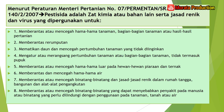Yang keempat, mengatur atau merangsang pertumbuhan tanaman atau bagian-bagian tanaman, tidak termasuk pupuk. Yang kelima, memberantas atau mencegah hama-hama luar pada hewan-hewan peliharaan dan ternak. Yang keenam, memberantas dan mencegah hama-hama air. Yang ketujuh, memberantas atau mencegah binatang-binatang dan jasad-jasad renik dalam rumah tangga, bangunan, dan alat-alat pengangkutan. Yang kedelapan, memberantas atau mencegah binatang-binatang yang dapat menyebabkan penyakit pada manusia atau binatang yang perlu dilindungi, dengan penggunaan pada tanaman, tanah, atau air.